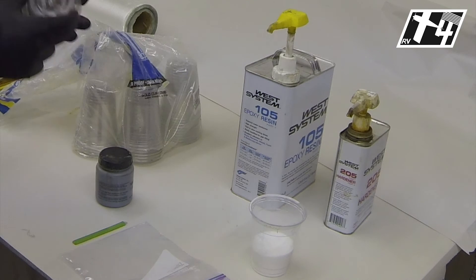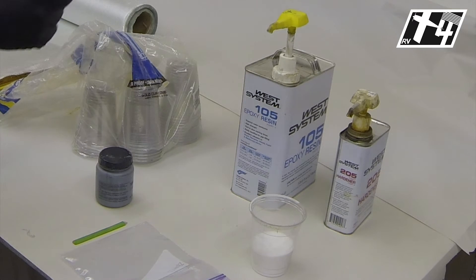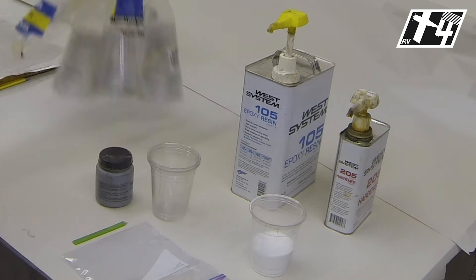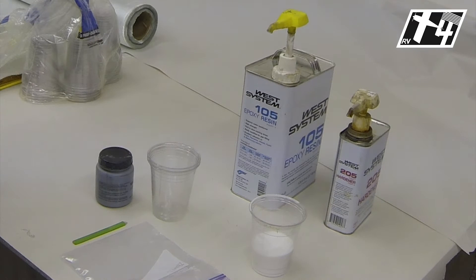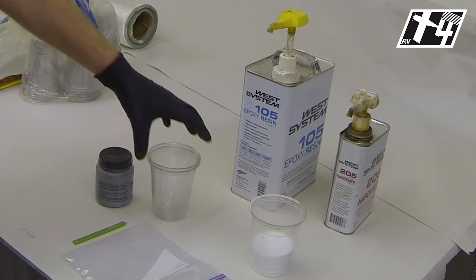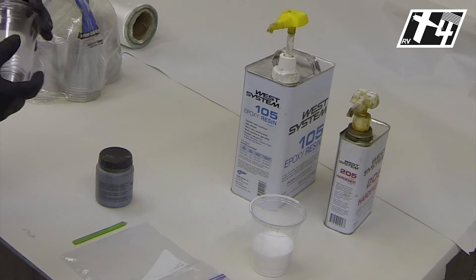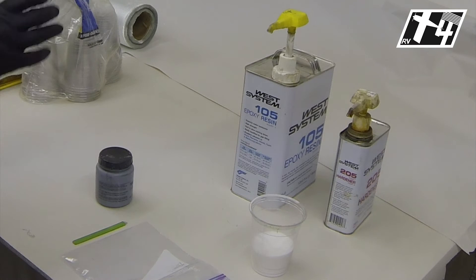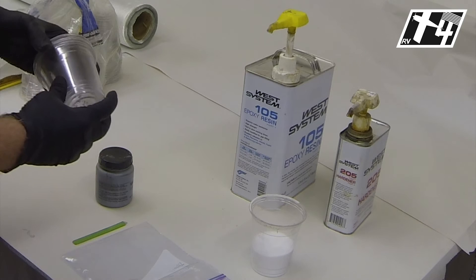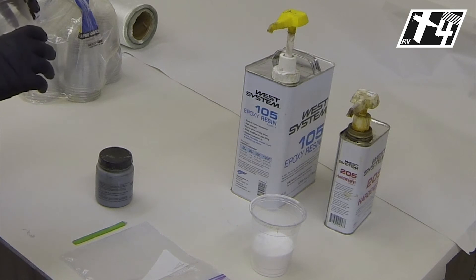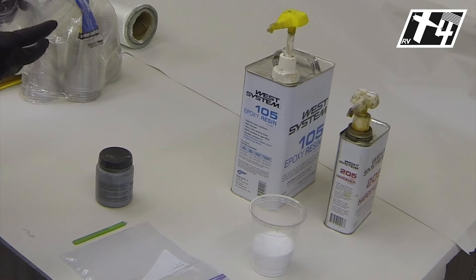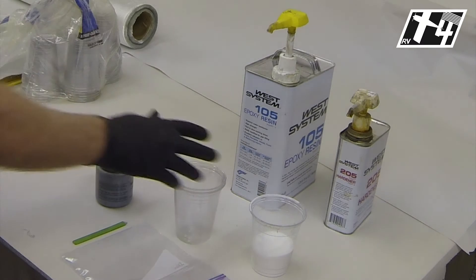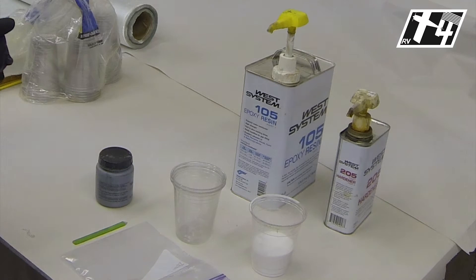Mixing cups. We just use a simple clear 12 ounce solo cup that you can buy in large bagfuls at grocery stores, that type of place. Whatever you use for a cup consider being sure that it's compatible with the resin that you're using. If you don't know for sure do a small batch of resin as a test and make sure it doesn't melt your cup. These cups work fine with the epoxy and polyester resins and they're relatively inexpensive so we just throw them away.